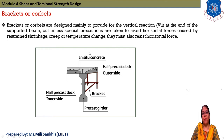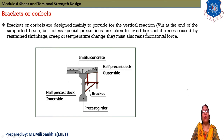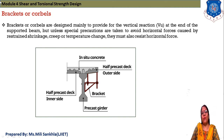Brackets or corbels are designed mainly to provide for vertical reaction at the end support of a beam. But unless special precautions are taken to avoid horizontal forces caused by restraint, shrinkage, creep, and temperature change, they must also resist horizontal forces. So the purpose of brackets and corbels is to resist mainly horizontal forces, while the vertical reaction is balanced here.